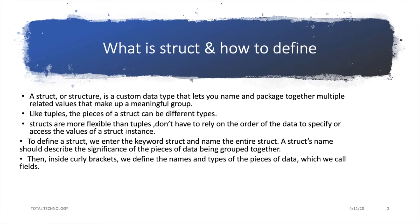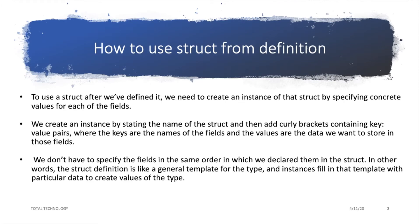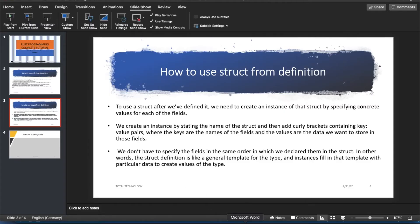To define a struct, we enter the keyword struct and name the entire struct. The struct name should describe the significant piece of data being grouped together. You use the struct keyword, then the name, and then curly braces. Inside the curly braces we define the names and types of the fields. After creating the struct there is the question of how to use it — first you define the struct, and then you create an instance of it, similar to creating a class and then an object. Let's move on to the coding part.